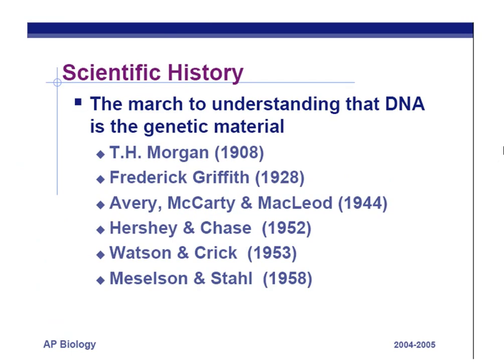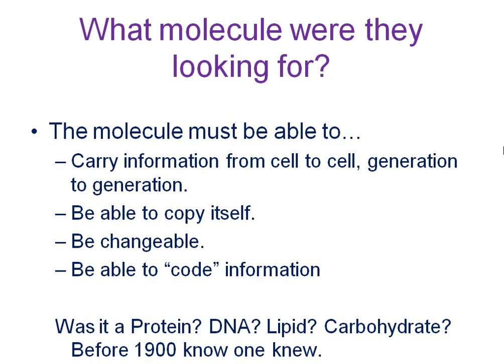These are some of the researchers that discovered DNA's nature as the molecule that transmits genetic information from cell to cell and generation to generation. One of the questions on the minds of researchers was how we pass on the codes for making a giraffe, a blue whale, a tree, a human being, or even a bacteria. They were looking for a molecule able to do a variety of different things. The first thing a molecule had to do is carry information from cell to cell and generation to generation.